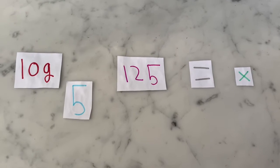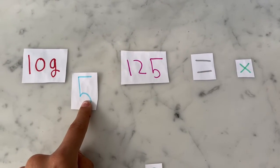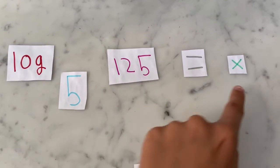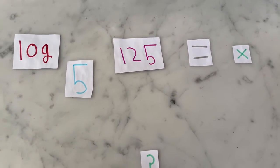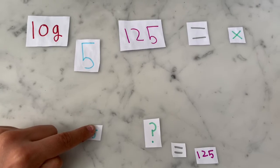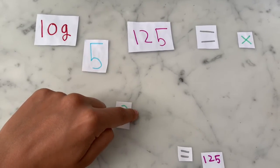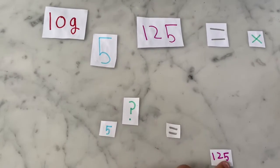Let's look at another example. Log base 5 of 125 equals x. We can rearrange this as 5 to the power of what equals 125?